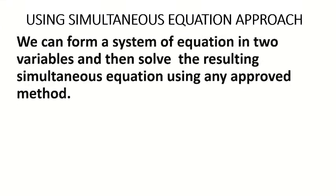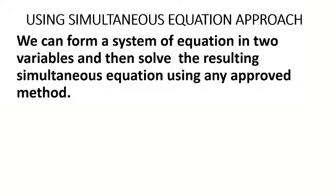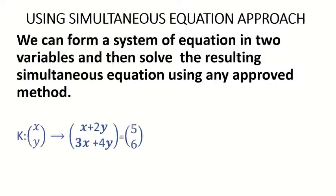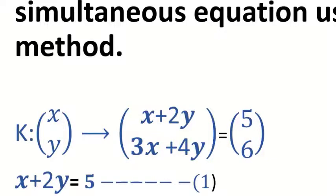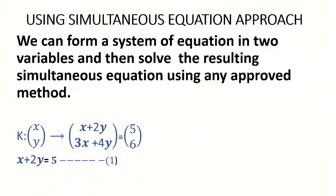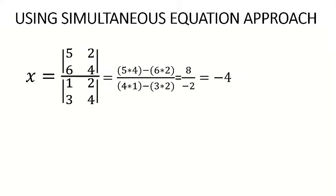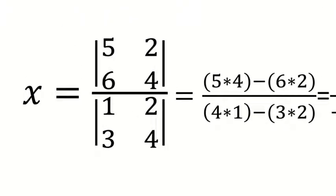Using the simultaneous equation approach, we can form a system of equations and solve using any approved method. We have XY maps onto (X + 2Y, 3X + 4Y) equal to the image (5, 6). Equating corresponding entries: equation 1 is X + 2Y = 5, and equation 2 is 3X + 4Y = 6. We use Cramer's rule — there is already a video on Cramer's rule, so please refer to that if needed. For X: determinant [5, 2; 6, 4] over original determinant [1, 2; 3, 4].